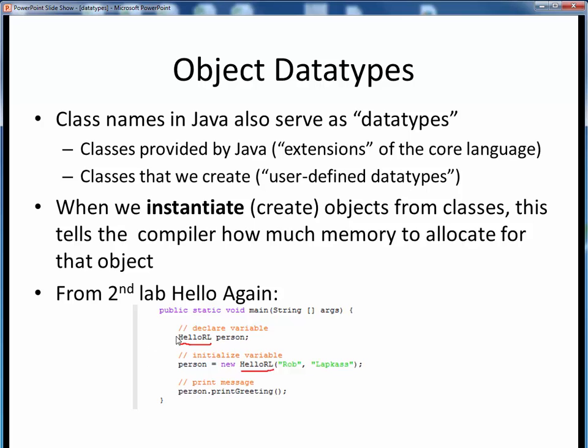For example, in this code example, when we created a person object from the Hello class, it's really an object of the user-defined Hello data type, as we've underlined here in red.